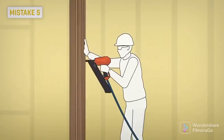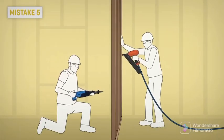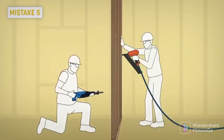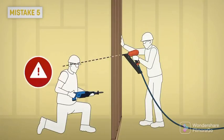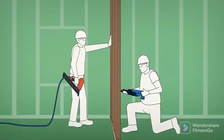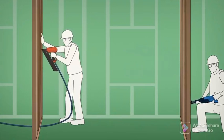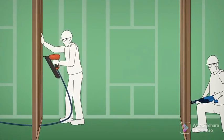Mistake 5: Firing when someone is in line with the nailing gun. We can't predict when the nail will accidentally fire or ricochet. You need to always be aware of the other people in your work area. Never point the tool towards yourself or towards someone else.